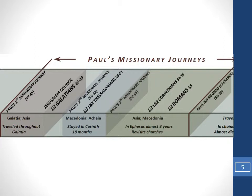There are three missionary journeys, and we're going to look through Acts as we go through these. In the first missionary journey, roughly 47 to 49 AD, Paul makes his first rounds particularly through the area of Galatia and Asia. In his second missionary journey, roughly 50 to 52 — though these dates may shift by as many as five years depending on your theological views — Paul travels through Macedonia and Achaia.